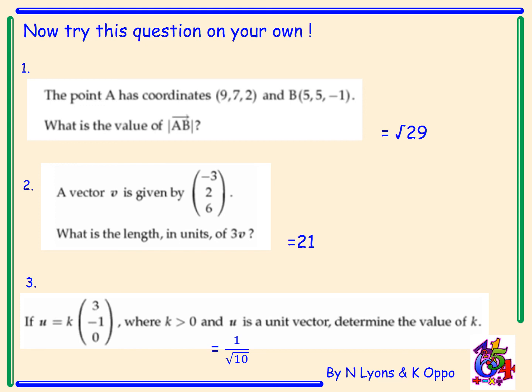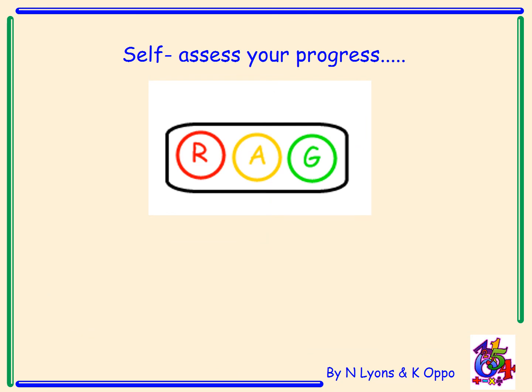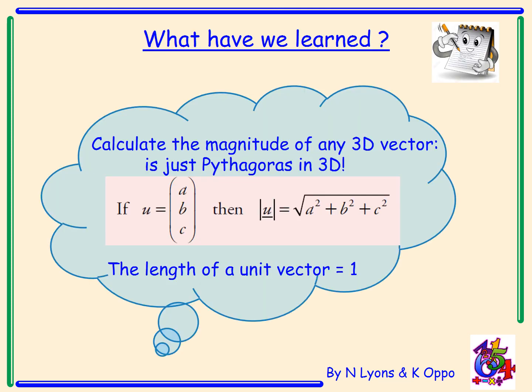So how did you get on? It's time to self-assess your progress. So, can you please put your RAG status in your jotter? Are you red, amber, or green? What have we learned today? Well, we've learned to calculate the magnitude of any 3D vector. It's just Pythagoras in 3D. We have the equation here. If U has components a, b, c, then the magnitude of the vector U equals a squared plus b squared plus c squared, and take the square root. We've also learned that the length of a unit vector equals 1.